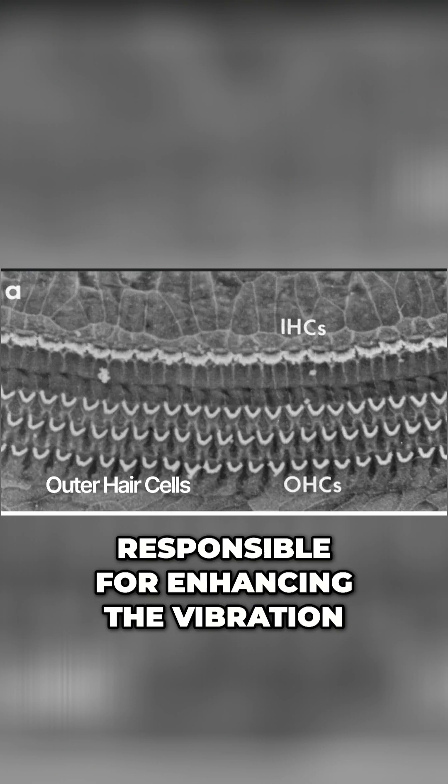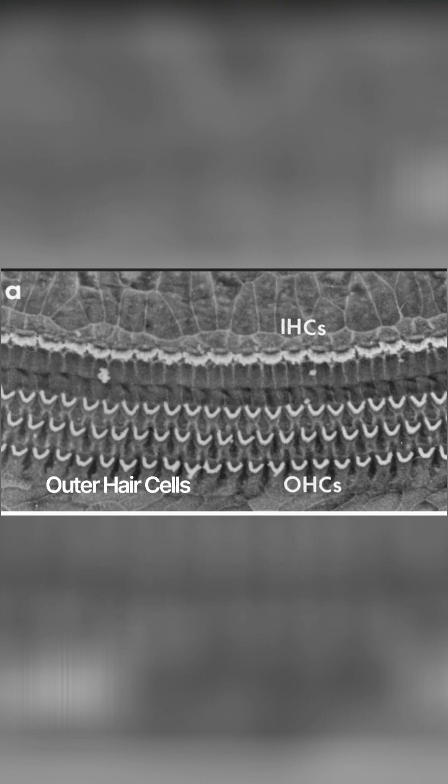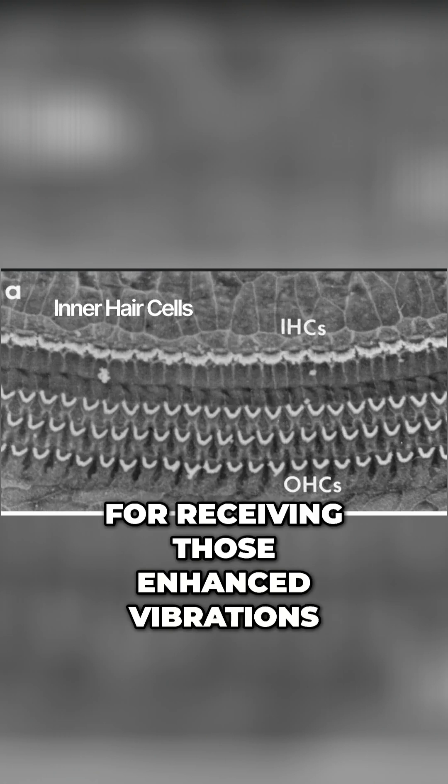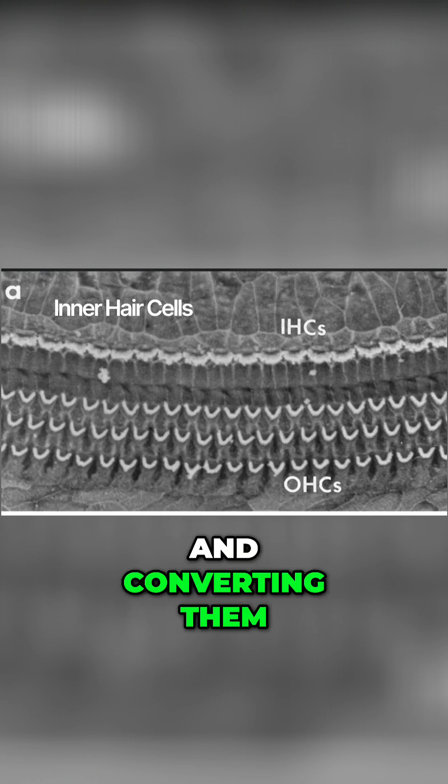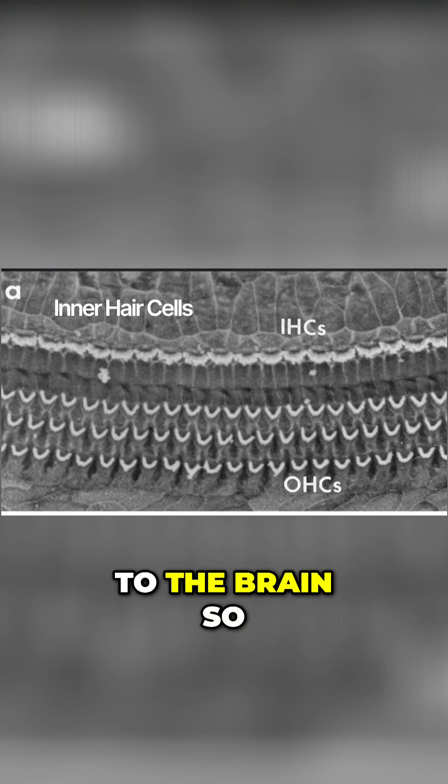The outer hair cells are responsible for enhancing the vibration of sound along the membrane, and the inner hair cells are responsible for receiving those enhanced vibrations and converting them to neural impulses which are then sent up the auditory nerve to the brain so you can hear.